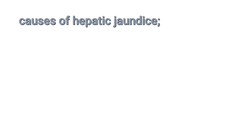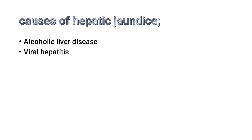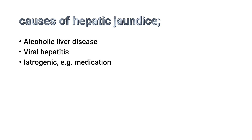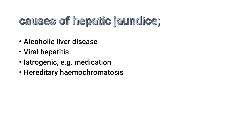The causes of hepatic jaundice include alcoholic liver disease — if the patient has been abusing alcohol for a long time, they may develop hepatic jaundice — as well as viral hepatitis, iatrogenic causes (side effects of medications), hereditary hemochromatosis, and autoimmune hepatitis.